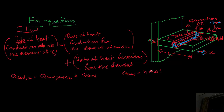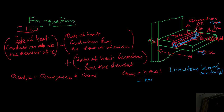Q convected can be written using Newton's law of cooling as H∞ times A times delta T. The area here is the perimeter P times the small length delta X, giving P·delta X as the surface area through which convection takes place. Delta T is the surface temperature T minus the ambient temperature T∞.